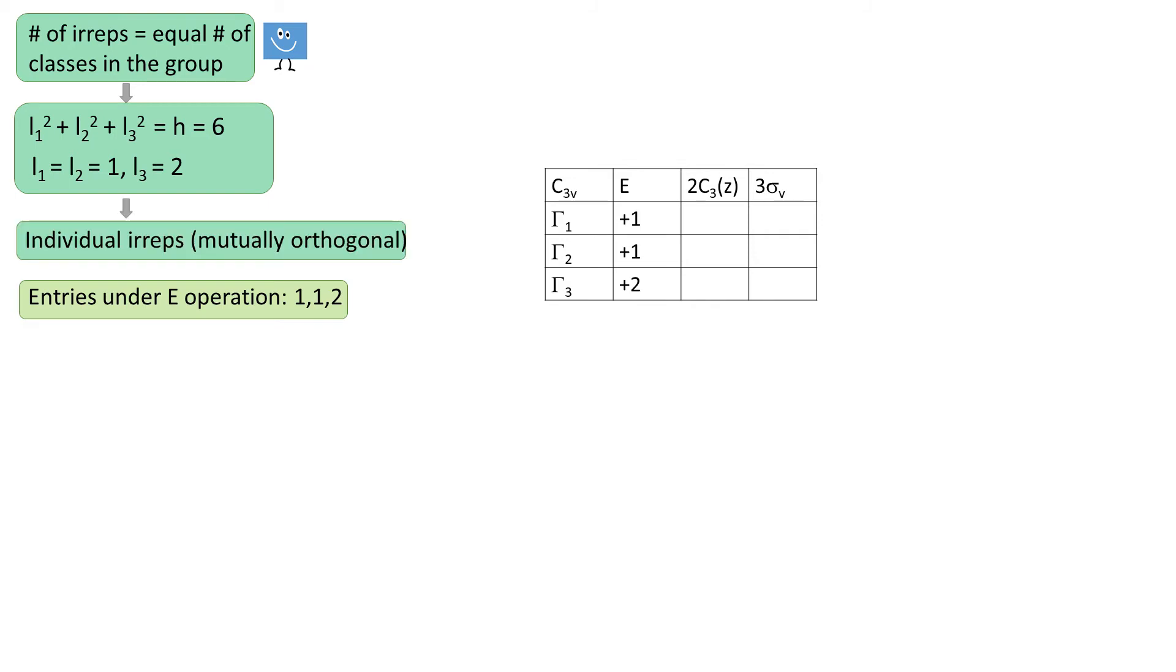So let's tackle the individual EREPs. The first one is the fully symmetric EREP. We can check if that's correct, by taking the dot product of this vector with itself, and it's 6 as expected.